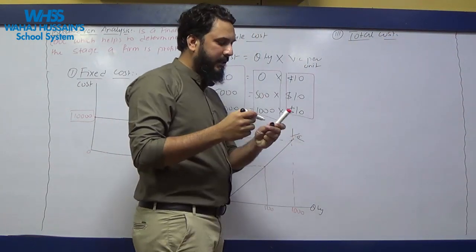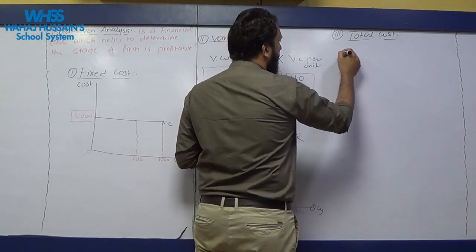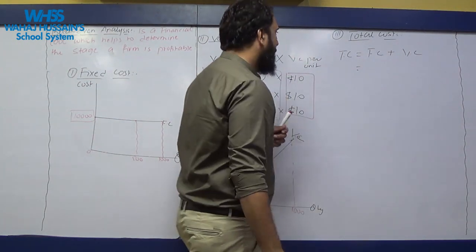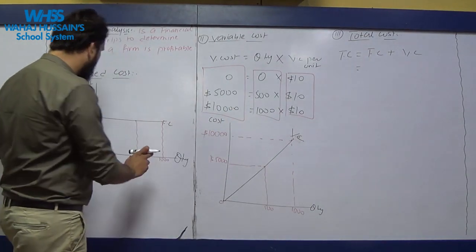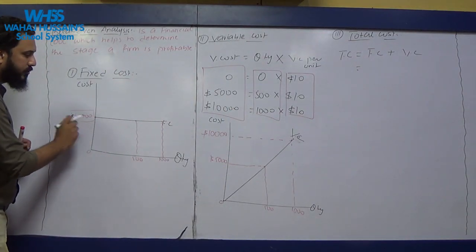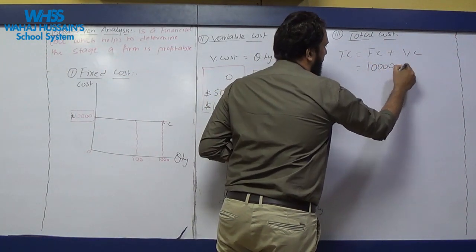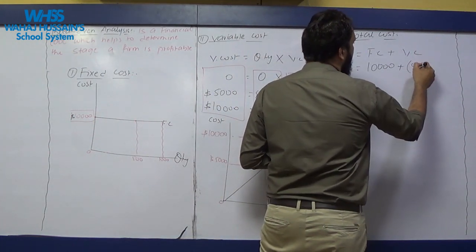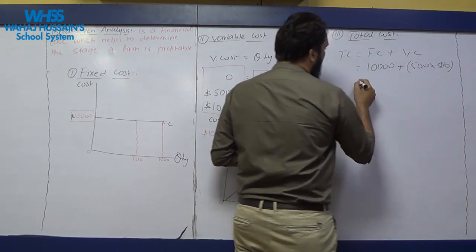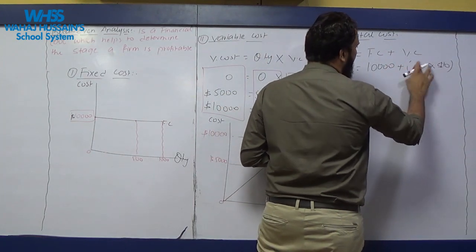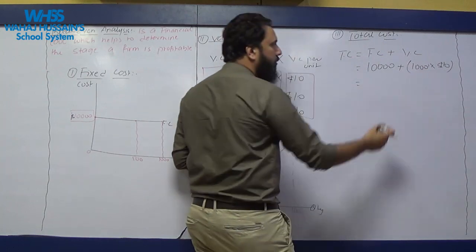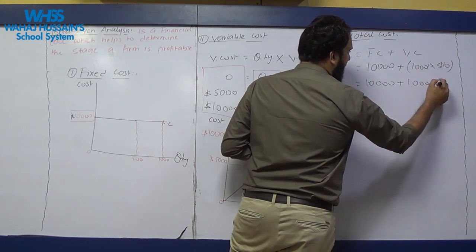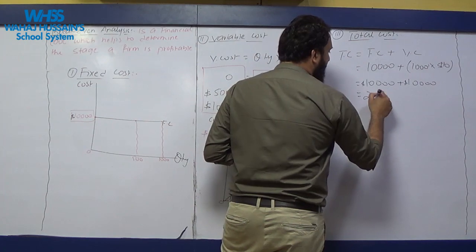The third important concept is total cost. Total cost equals fixed cost plus variable cost. Fixed cost is constant at $10,000. If we produce 500 units at $10 each, variable cost is $5,000, giving a total cost of $15,000. If we produce 1,000 units at $10 each, variable cost is $10,000, so total cost is $10,000 plus $10,000, which equals $20,000.